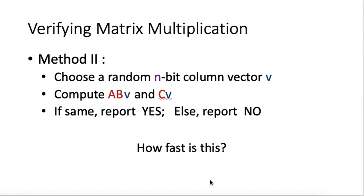Here we can apply a very similar idea. Since we are working with matrix, what we are going to do here is we are generating not a random number, but a random n-bit vector. This vector is an n-bit column vector, let's call it V. We compute A times B times V, and we also compute C times V. If these two vectors are the same, then we will report yes, AB is equal to C. Otherwise, we will report no.